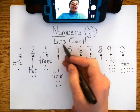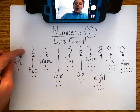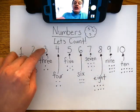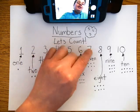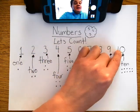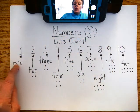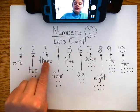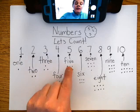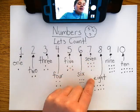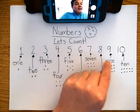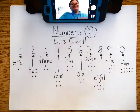So let's count. One, two, three, four, five, six, seven, eight, nine, ten. One, two, three, four, five, six, seven, eight, nine, ten.